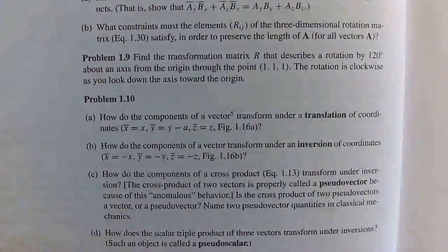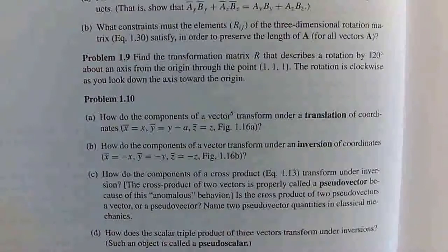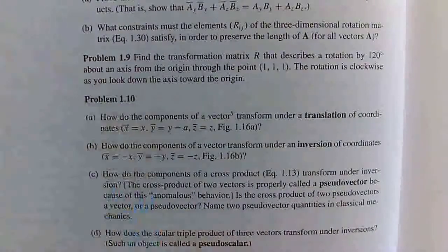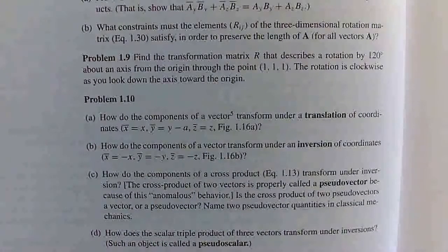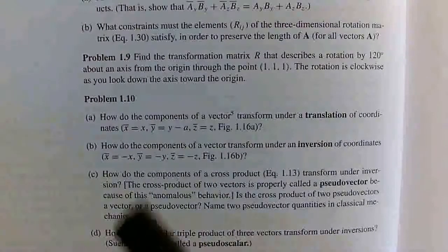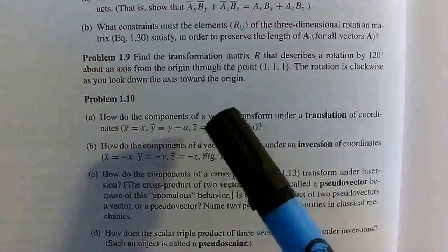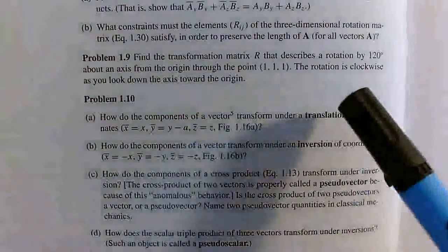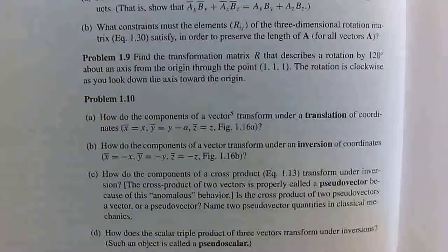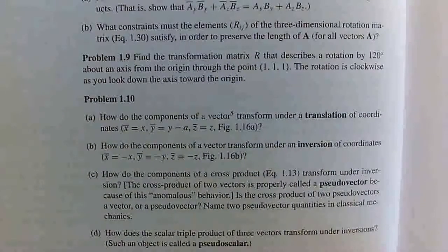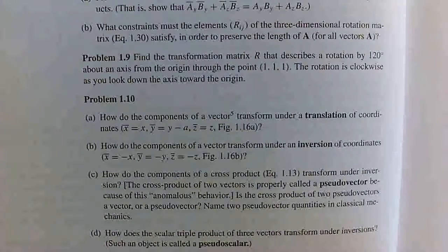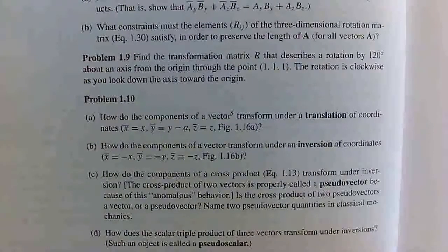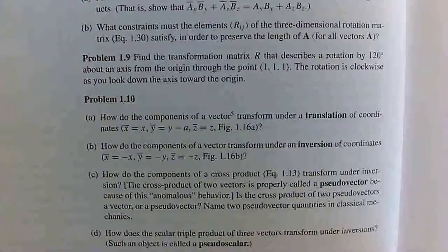Hello everyone, in this video we're going to be solving problem 1.9 from Griffith's introduction to electrodynamics. Find the transformation matrix R that describes a rotation by 120 degrees about an axis from the origin through the point (1,1,1). The rotation is clockwise as you look down the axis toward the origin.